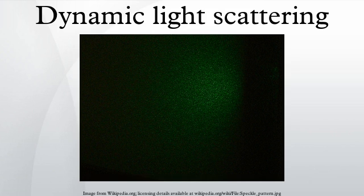Setup: a monochromatic light source, usually a laser, is shot through a polarizer and into a sample. The scattered light then goes through a second polarizer where it is collected by a photomultiplier and the resulting image is projected onto a screen. This is known as a speckle pattern.